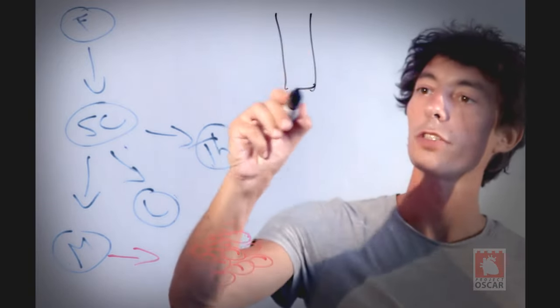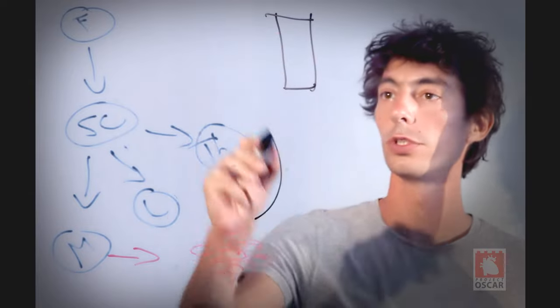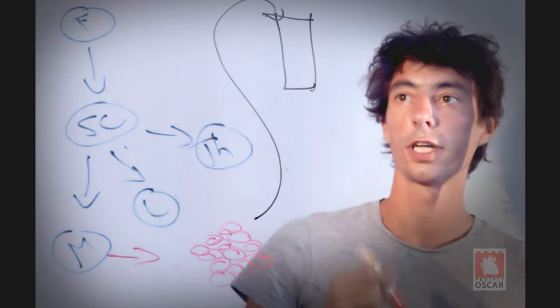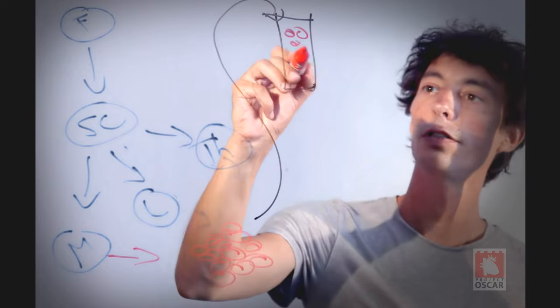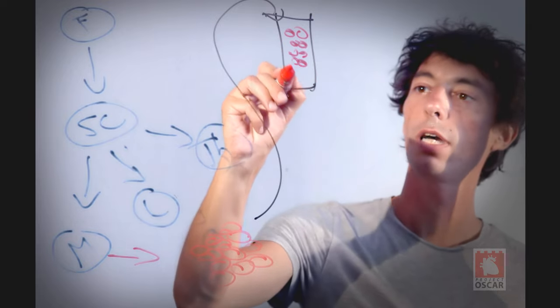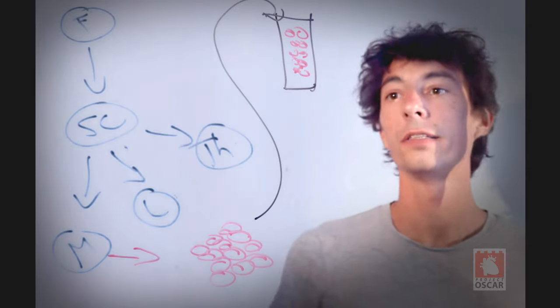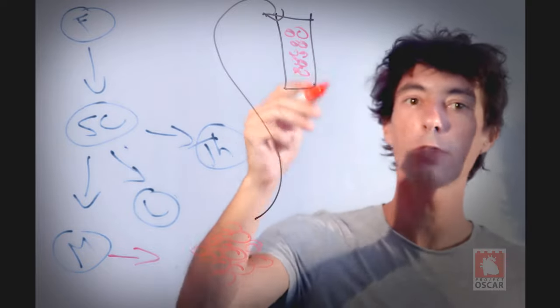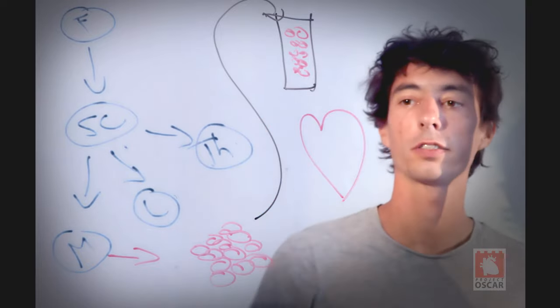This hydrogel containing the cells can then be put into a 3D printer cartridge. The cells are here swimming in the hydrogel. We then program the 3D printer to print this hydrogel into the shape of a heart.